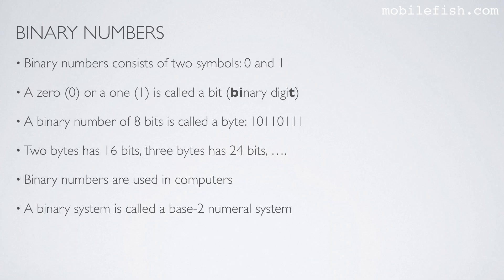A binary system is called a base 2 numeral system because it has two symbols, 0 or 1.